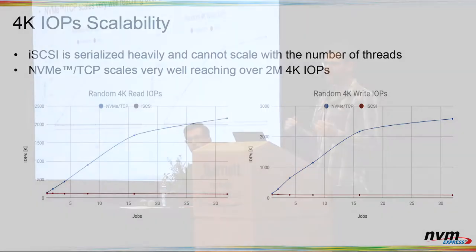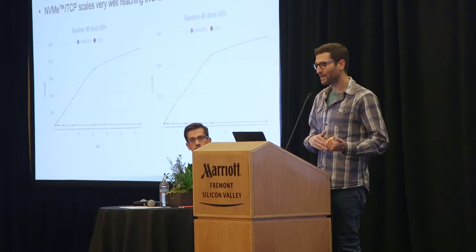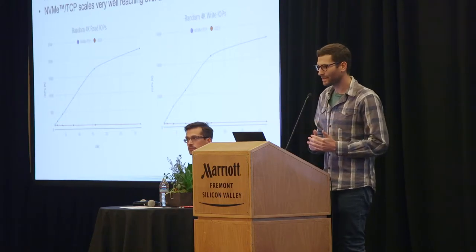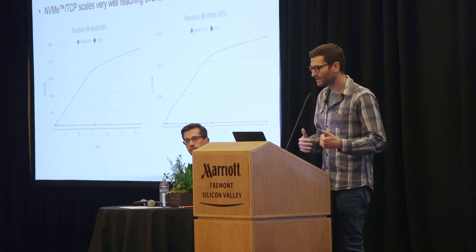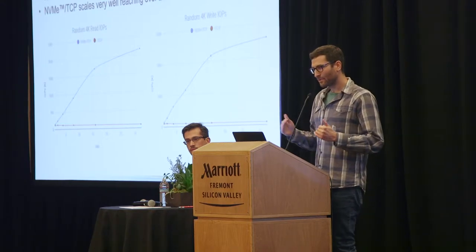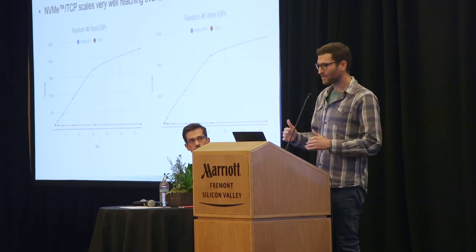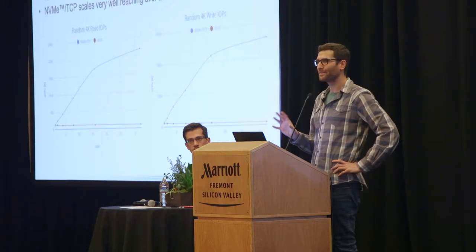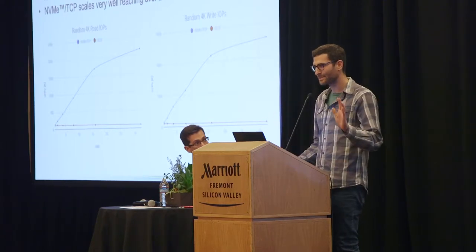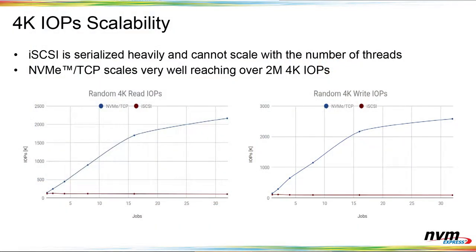iSCSI, for comparison, is serialized under the same TCP connection, which really limits the performance you can get from the host side. NVMe over TCP can scale to over two million IOPS in this specific test case, though it really varies depending on environment and network topology. This was measured with the upstream kernel running both host and target sides, doing IO with standard NVMe flash drives — nothing fancy.